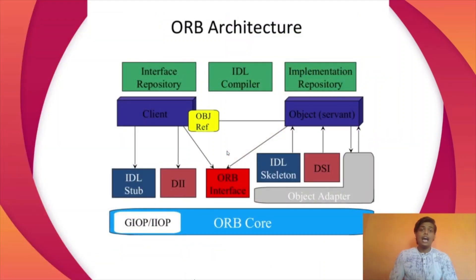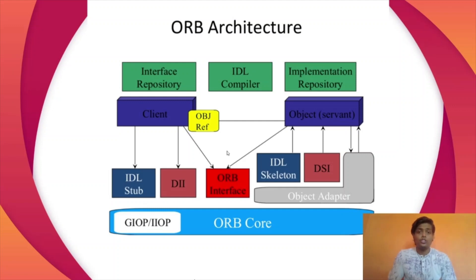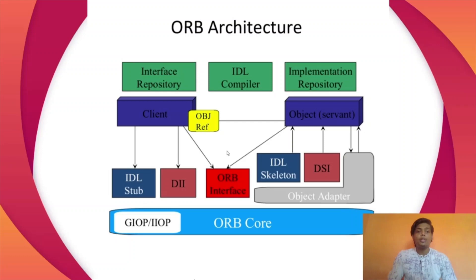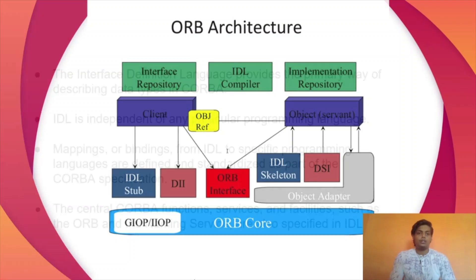Here you can see a descriptive diagram of CORBA. In it, you can see the interface repository and implementation repository, used to contain metadata of the client and server respectively. There are also other elements: IDL stub, IDL skeleton, dynamic invocation interface, dynamic skeleton interface, ORB interface, and object adapter.